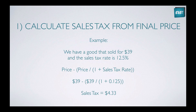We simply plug those numbers into the formula: price minus price divided by 1 plus the sales tax rate, or $39 minus 39 divided by 1.125. You need to work out the brackets first — 1 plus 0.125 is 1.125. Then 39 divided by 1.125, take that away from 39. The sales tax is $4.33. Try that on your calculator and you'll get the same result.